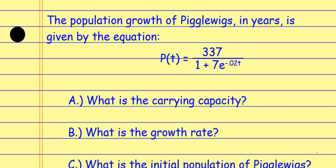Next example: the population growth of piggle wigs (flying pigs) is given by P of T equals 337 over one plus seven times E to the negative 0.02T. When interpreting this equation — what's the carrying capacity? Looking at the equation, the carrying capacity is 337. That's the value we're approaching and that the population can't exceed.